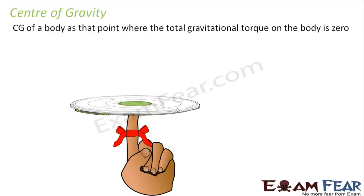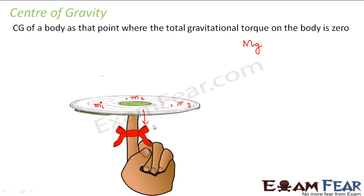So now let us see how center of gravity is related to the concept of center of mass. Let us consider this disc, which is made up of several particles m1, m2, m3 and so on. Let us assume the total mass of this disc is capital M. So the net gravitational force with which it is pulled towards the surface of the earth is nothing but Mg. So Mg would be the force with which it is pulled towards the earth, and there would be a reaction force R in the opposite direction. For this body to be in equilibrium, Mg should be equal to R.